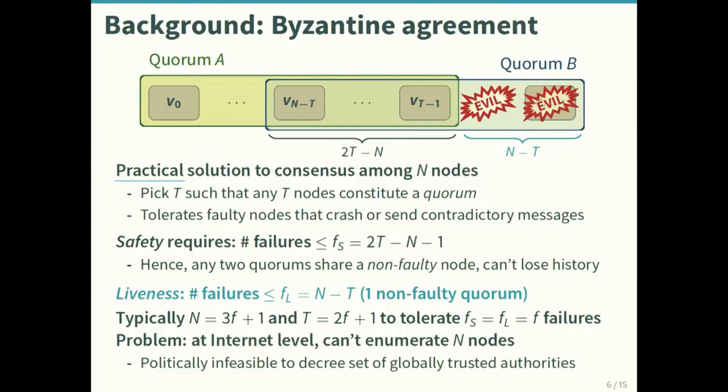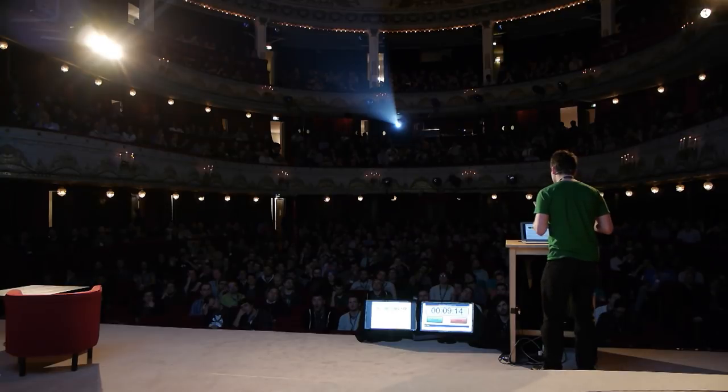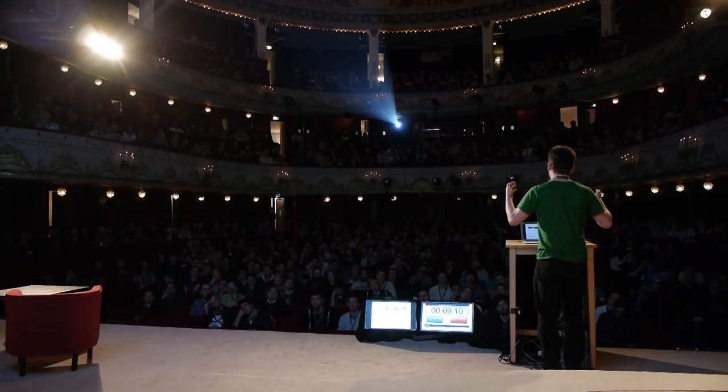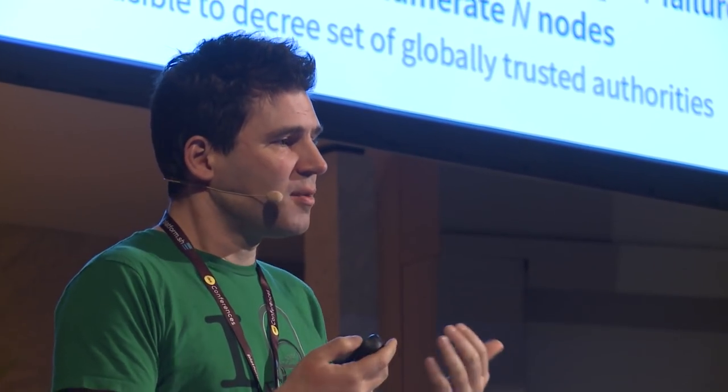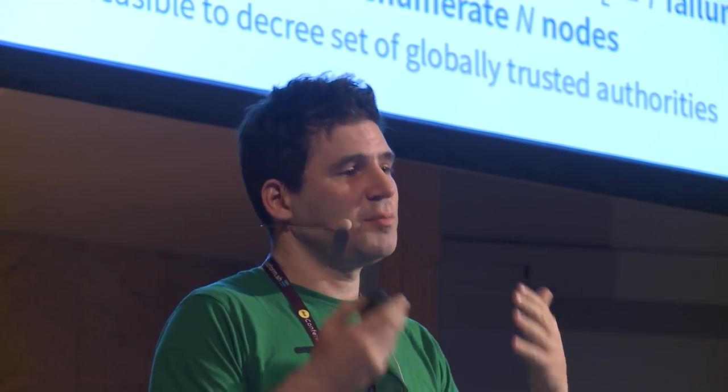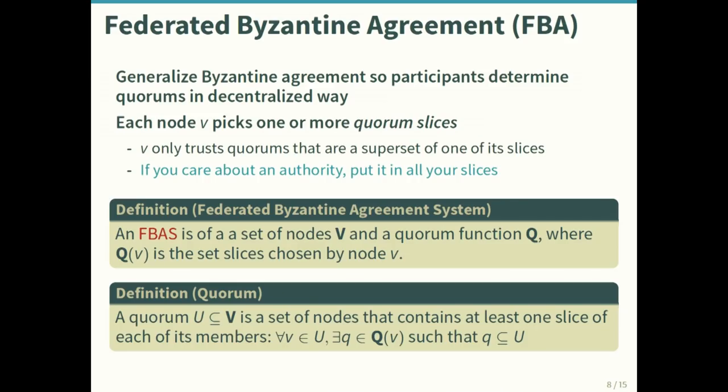For liveness — continuing to make progress — you need at least one quorum of non-faulty nodes, so the most failures you can withstand is n minus t. Typically people configure systems with n equal to 3f plus 1 for some integer f, which is the equilibrium point where you can tolerate up to f failures and still guarantee both safety and liveness. The problem is that at the scale of the internet, how do we enumerate the n nodes that need to agree? It's politically infeasible to bless n privileged actors and say these are the people everyone on the internet should trust.